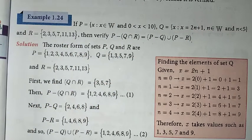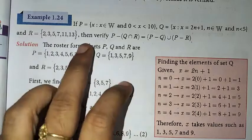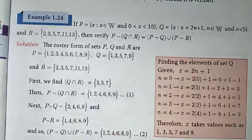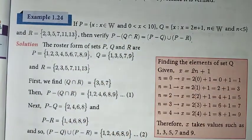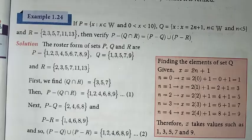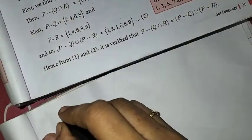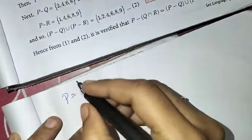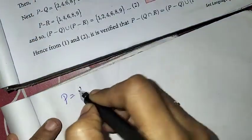So first we find P, Q, and R. That is the roster formula — the numbers as distinct elements.